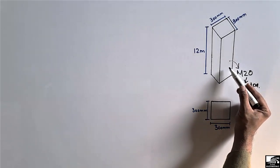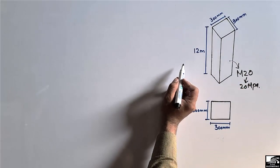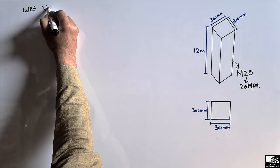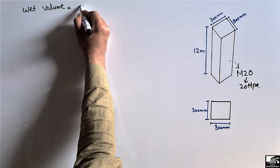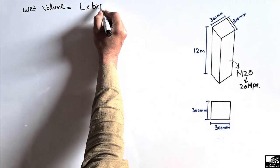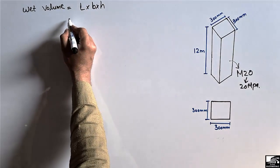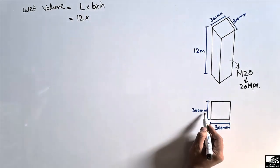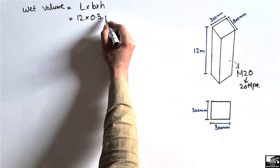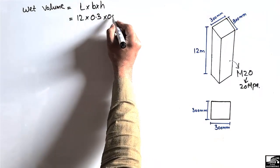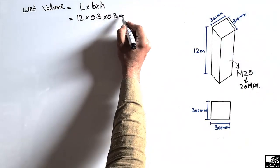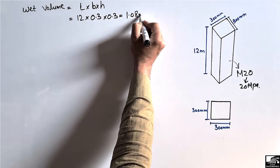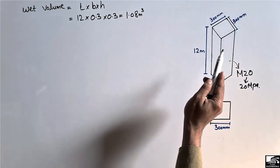To find out the quantities of cement, sand, and aggregate, we first need to find the wet volume of this RCC column. Wet volume equals length multiplied by breadth multiplied by height. The length is 12 meters, the breadth is 300 mm or 0.3 meters, and the height is also 0.3 meters. This gives a wet volume of 1.08 cubic meters.